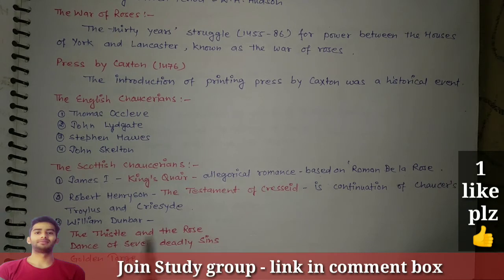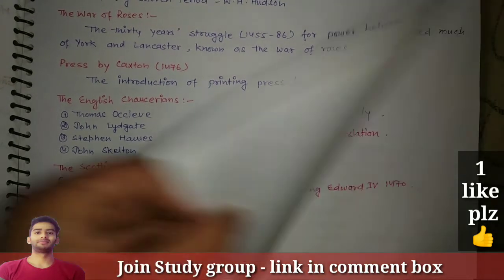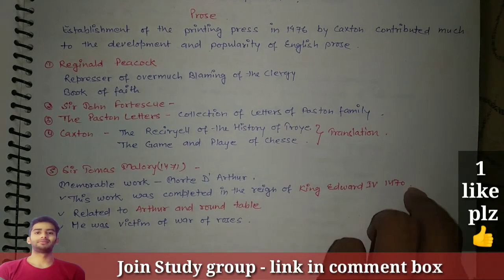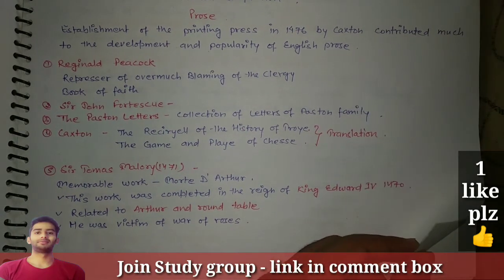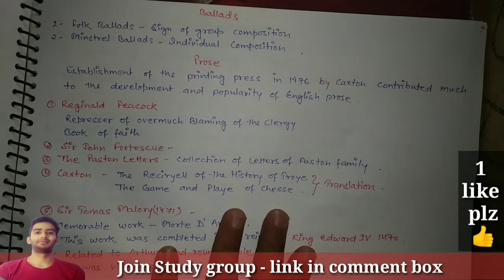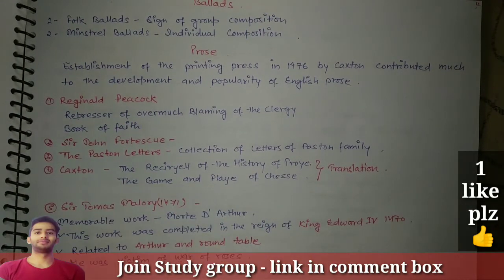William Dunbar is an important writer, and his important works are The Thistle and the Rose, The Dance of the Seven Deadly Sins, and The Golden Targe. We will be doing a discussion on ballads later in the next video.